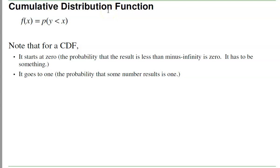A cumulative distribution function tells you the probability that y is less than x. It must start at 0, meaning the probability that nothing happened is 0, and it must go to 1, meaning the probability that something happened is 1. That's one way to mathematically describe a probability function, a cumulative distribution function.